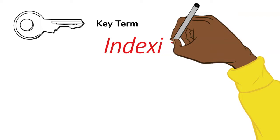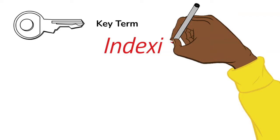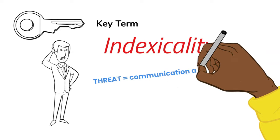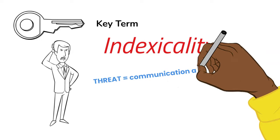However, this also shows that indexicality is clearly a threat to social order, because if meanings are inherently unclear or unstable, communication and cooperation become difficult and social relationships may begin to break down.